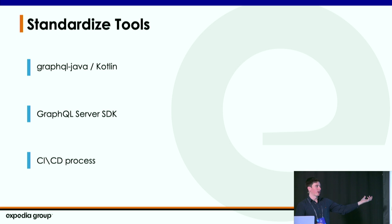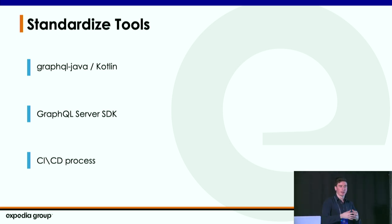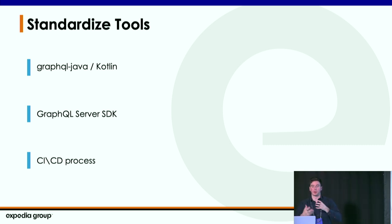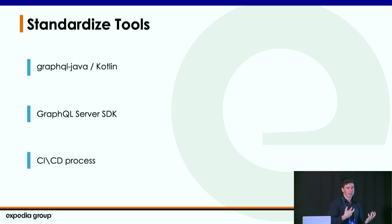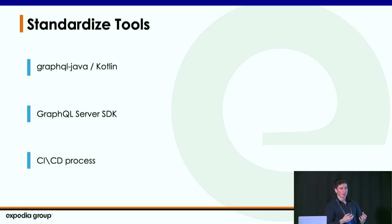Since we now have this SDK defining how everything's built, we also wanted to standardize our CI/CD process. All these tools come together to make sure everyone's doing the same thing — because in a large-scale company like Expedia Group, we want the best tooling available. And if one person fixes something from the community, everyone gets the benefit.